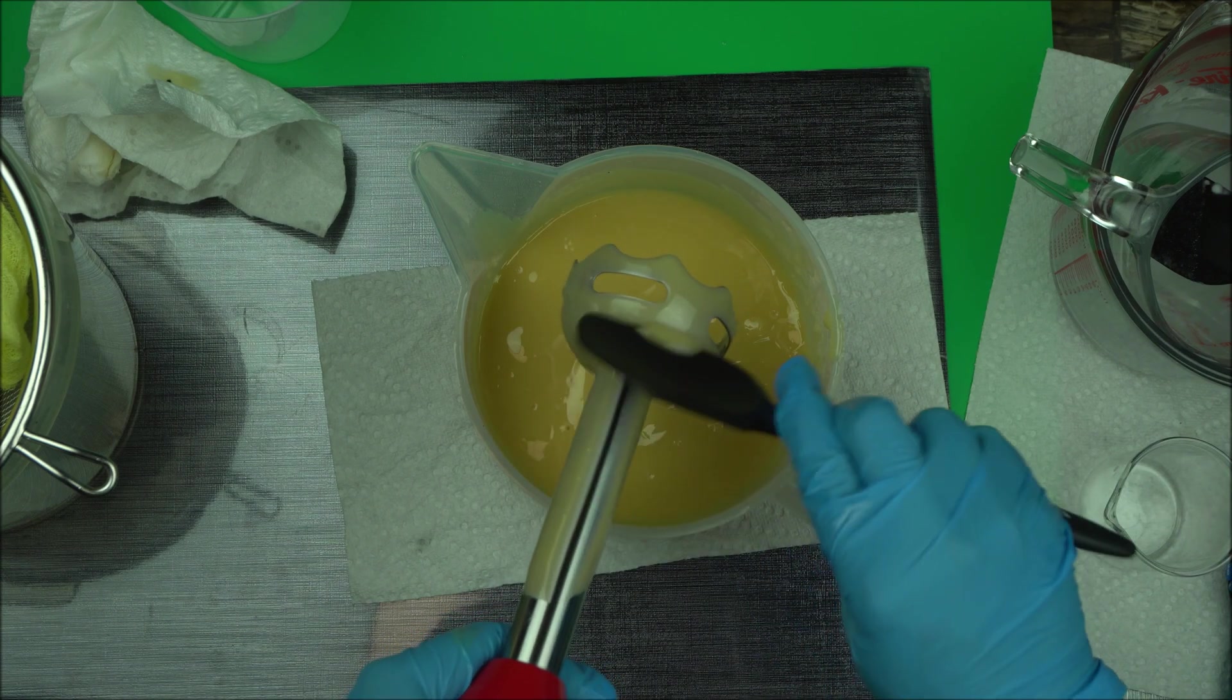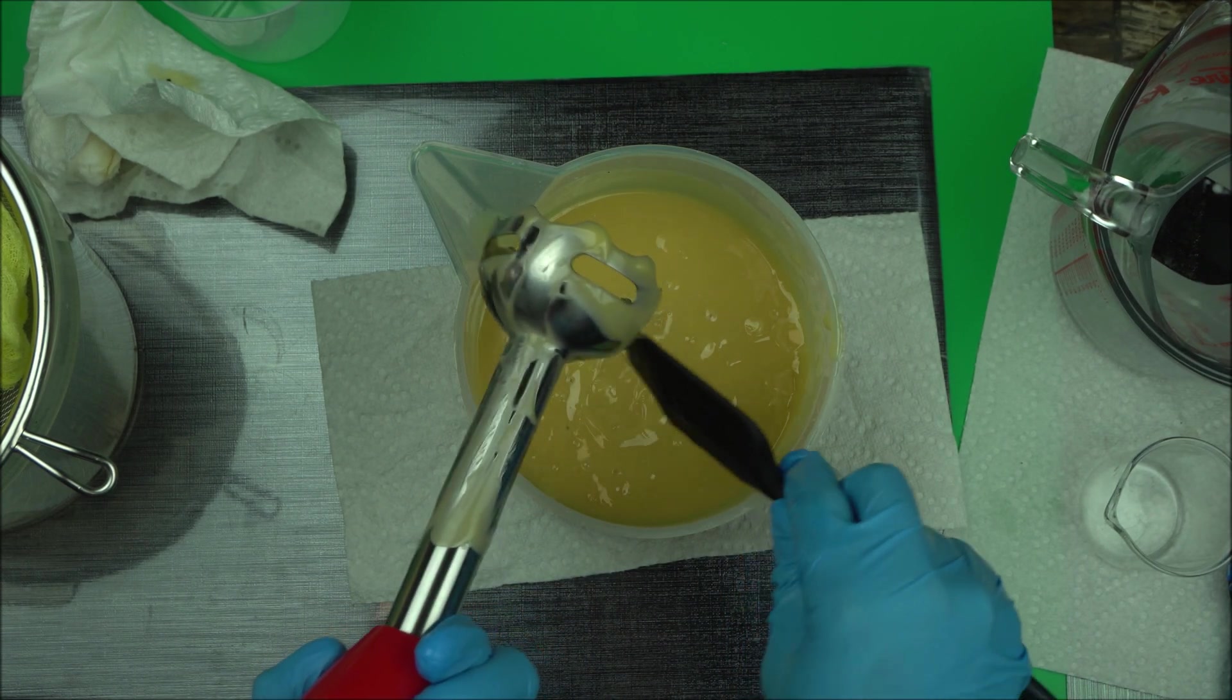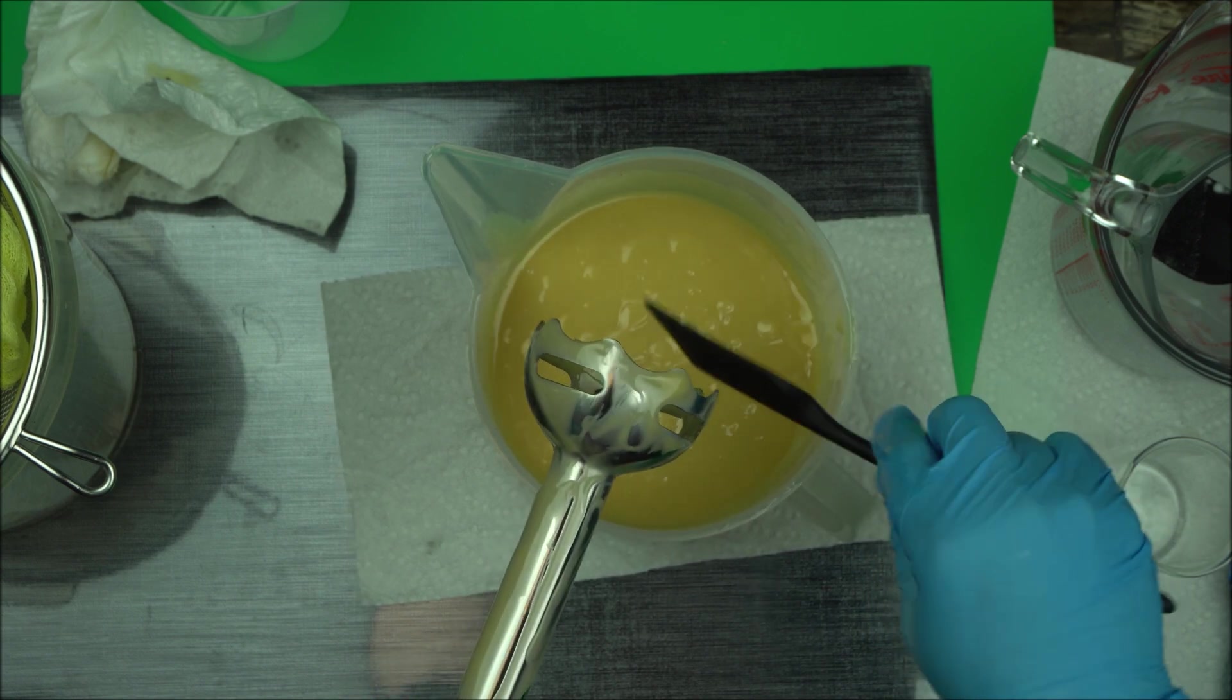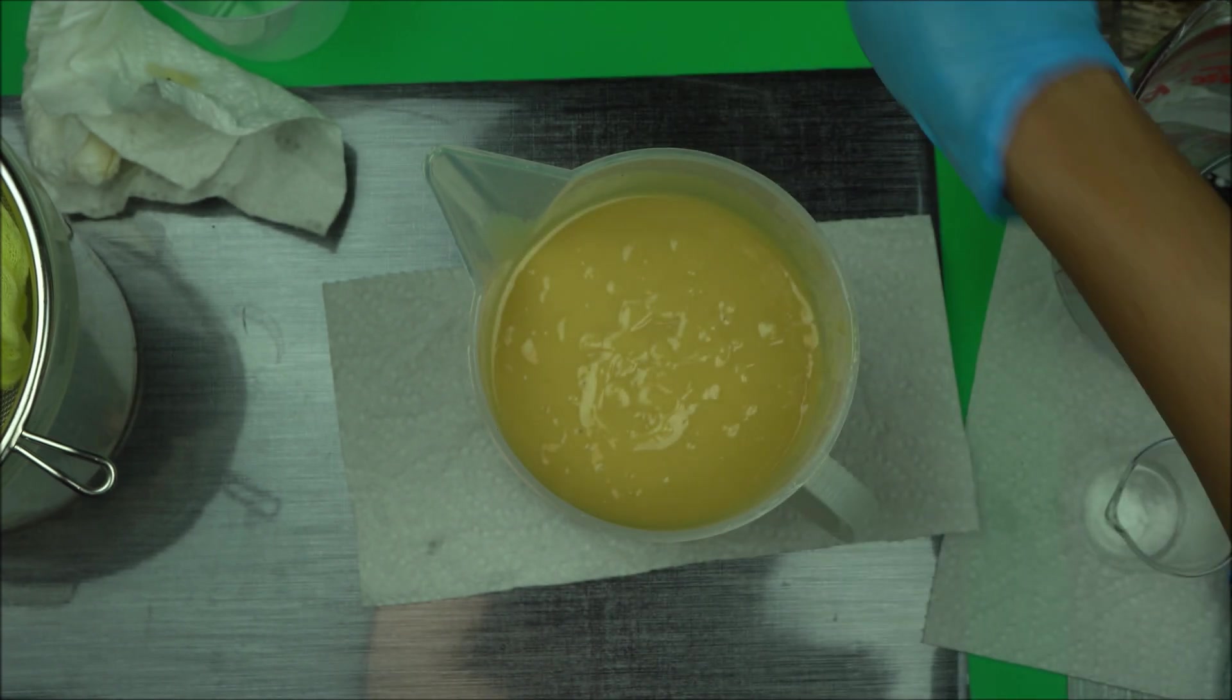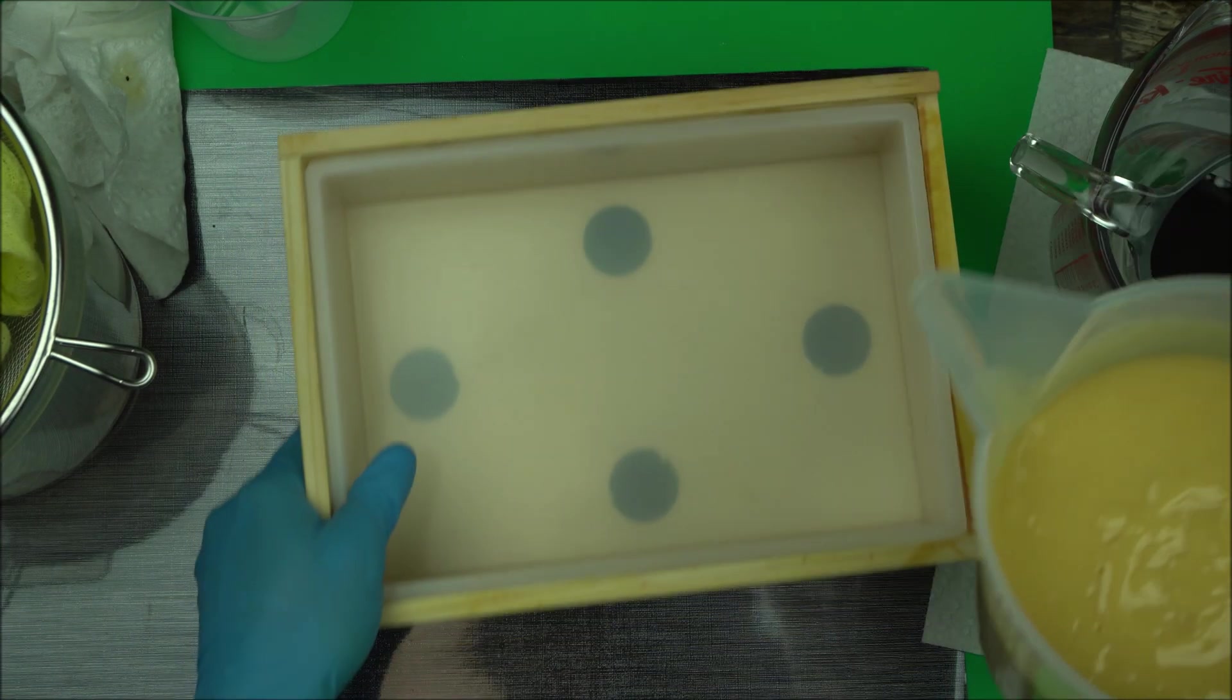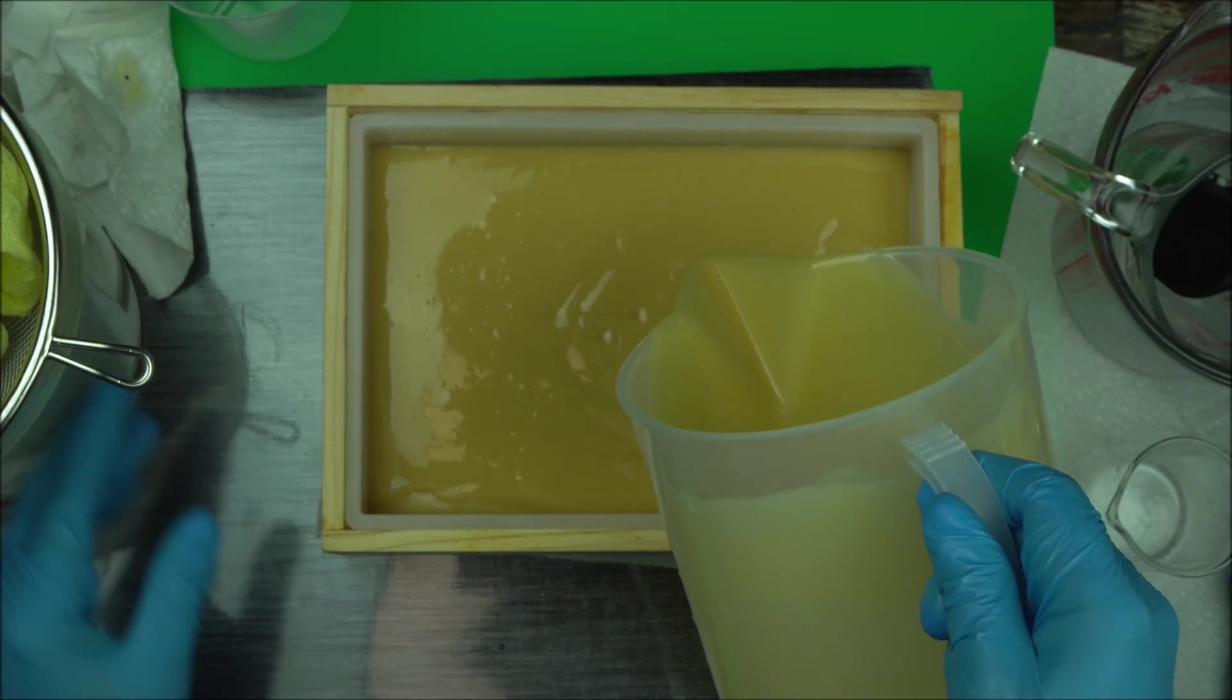We're going to pour into the mold and our cleaning soap is ready as it completes the saponification process. Remember, the saponification process is when you blend oil and lye solution and it turns into soap. This usually takes one month. We're going to pour this into the mold.